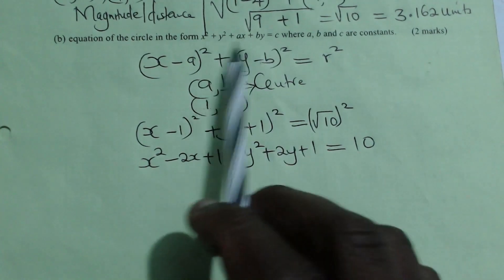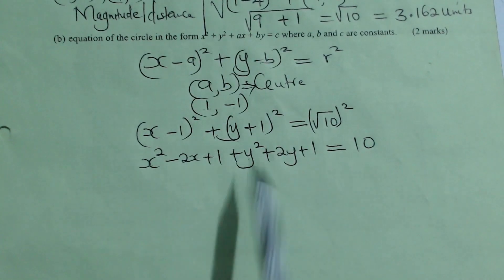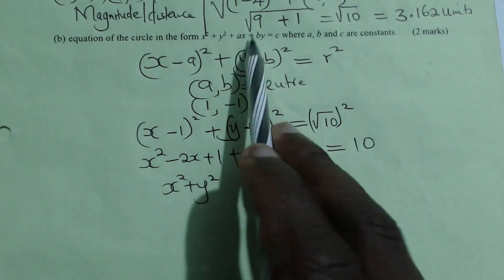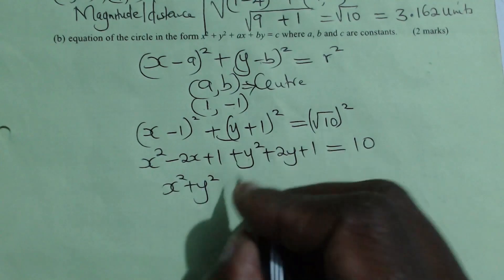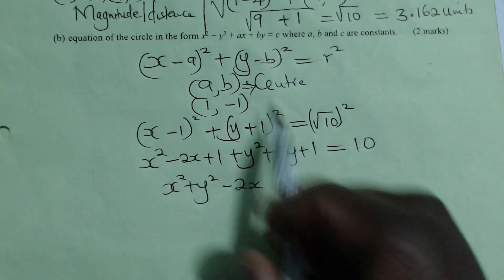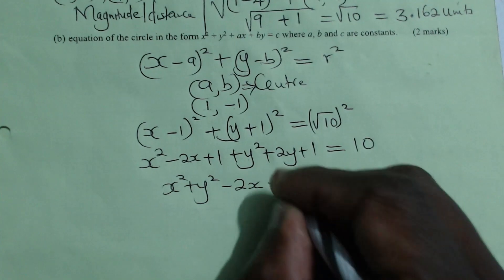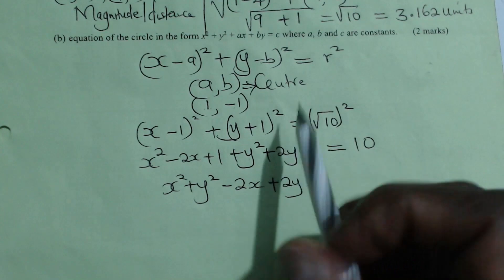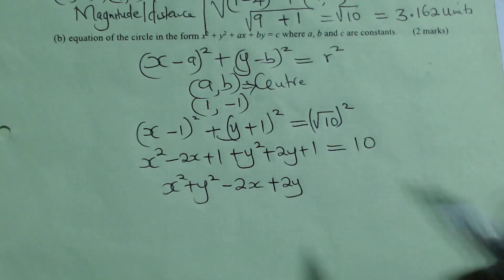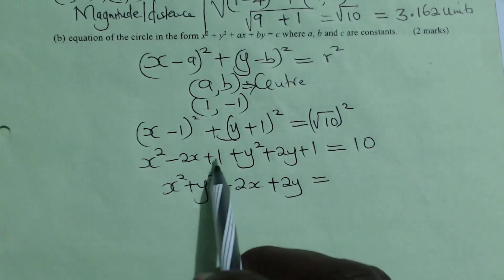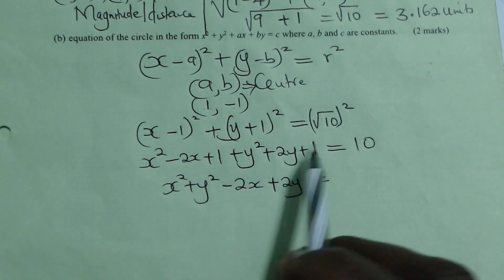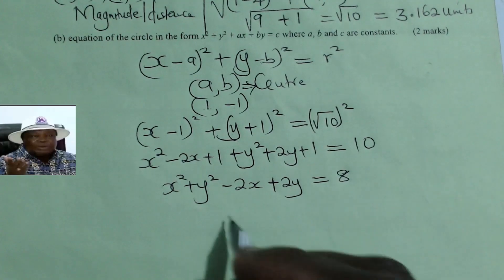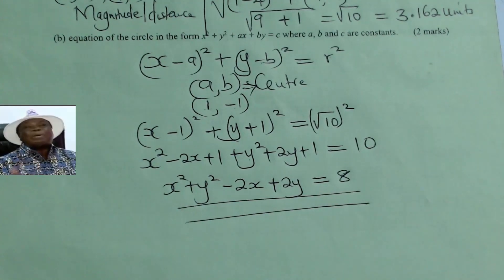Reorganizing to the required form: x² + y² − 2x + 2y, then moving the constant to the other side — 1 plus 1 gives 2, taken to the other side: 10 minus 2 equals 8. So the final equation is x² + y² − 2x + 2y = 8.